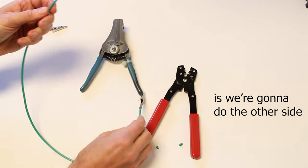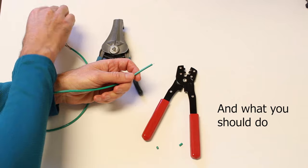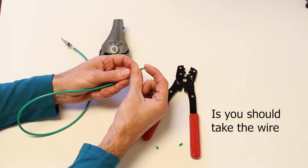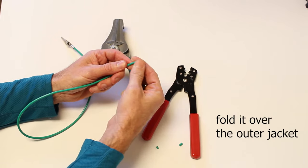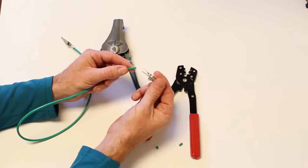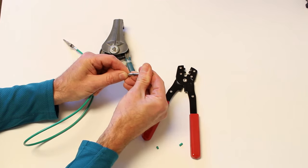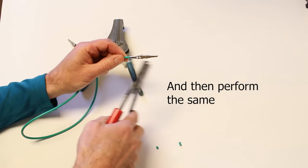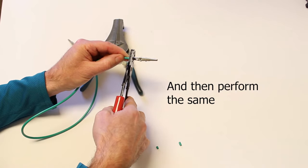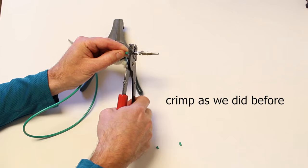Now what we're going to do is we're going to do the other side, and what you should do is you should take the wire, fold it over the outer jacket, take the clip, insert it inside the barrel, and then perform the same crimp as we did before.